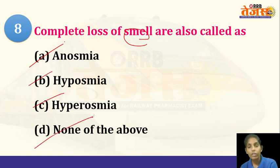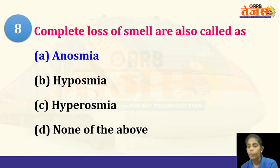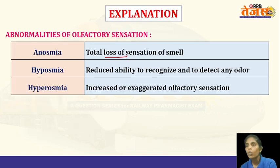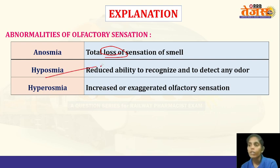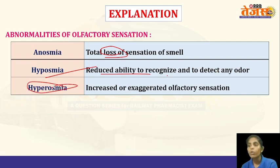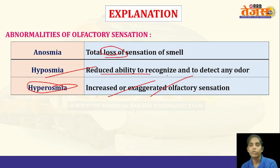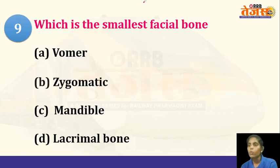Next question: complete loss of smell is also called — anosmia, hyposmia, hyperosmia, or none of the above? The answer is anosmia. Anosmia is a total loss of sensation of smell. Hyposmia is a reduced ability to recognize or detect any odor or smell. Hyperosmia is an increased or exaggerated olfactory sensation.